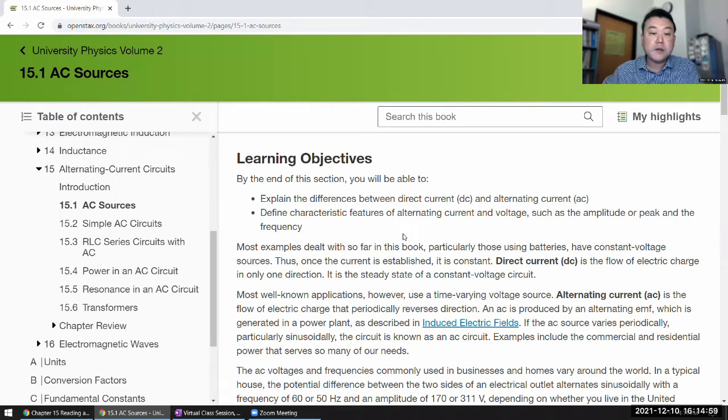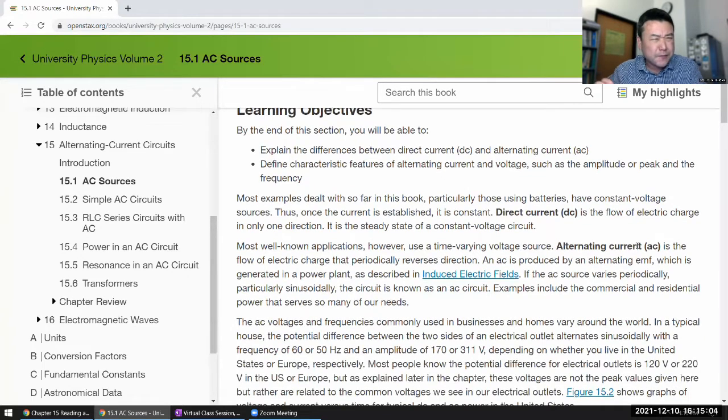Now in Chapter 15, we'll have AC sources. We'll have an alternating current, even when it's a voltage source, we call it alternating current source. Use a time-varying voltage source, alternating current is the term we use.